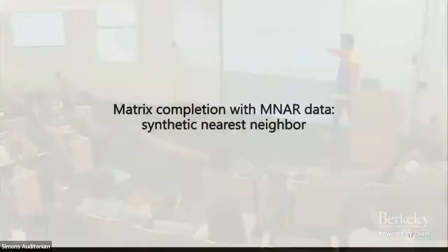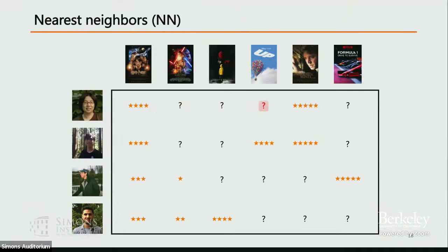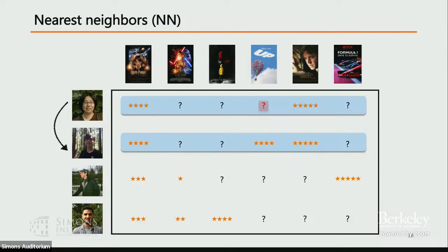Here's the SNN method. It combines two ideas: nearest neighbors from machine learning, and synthetic controls from econometrics. In nearest neighbor, to fill a missing entry, you look at which other rows have the same observed columns and use their values in the missing column to impute. That's 1-nearest-neighbor; you can extend to k-nearest-neighbor by taking averages.